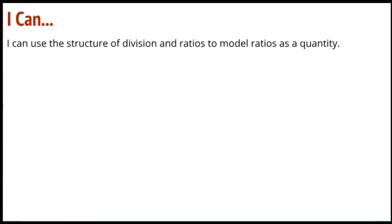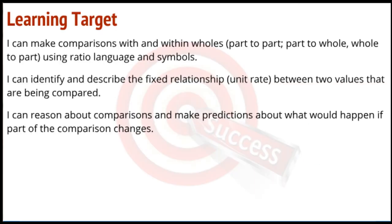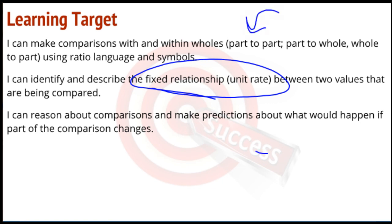Hopefully as we wind up the lesson, you are seeing how we can use the structure of division and ratios to model ratios as a quantity — take these ratios, turn them into rates, and use these rates to measure. We've looked at the fixed relationship using the unit rate, and then we've scaled up, and of course as part of this we were looking at ratios and equivalent ratios. That concludes Module 1, Lesson 18. If you've got questions, make sure you talk to your teacher and complete your problem set. Thank you.